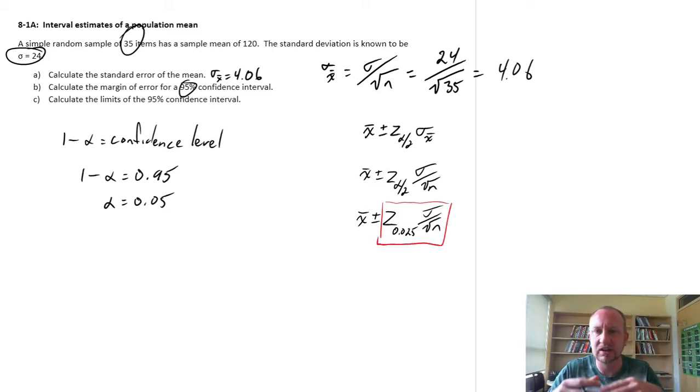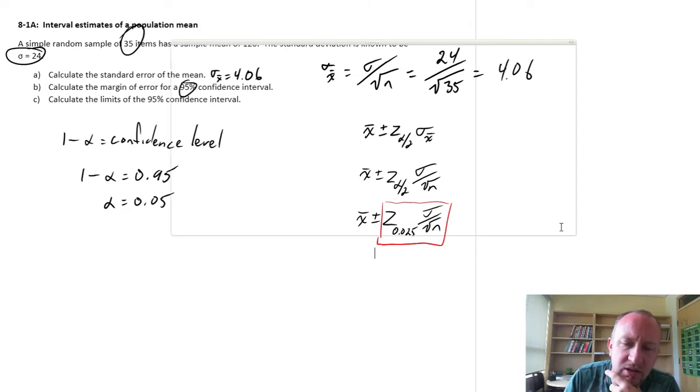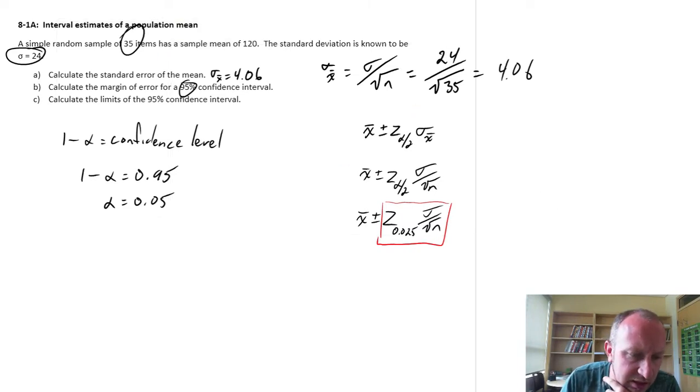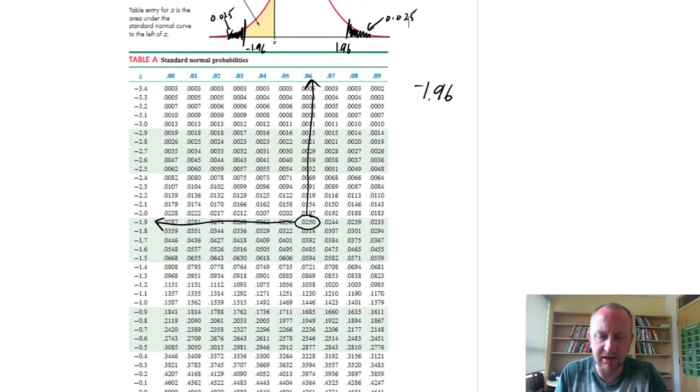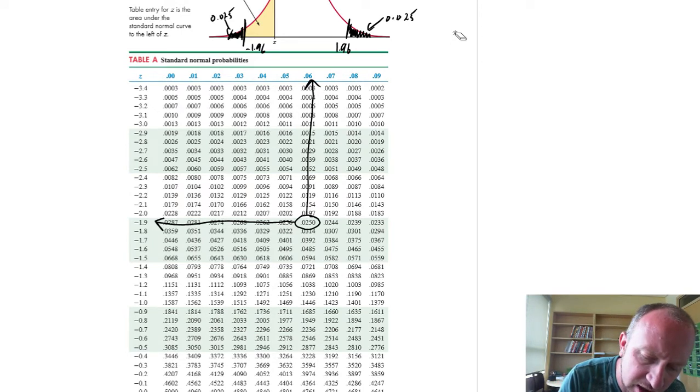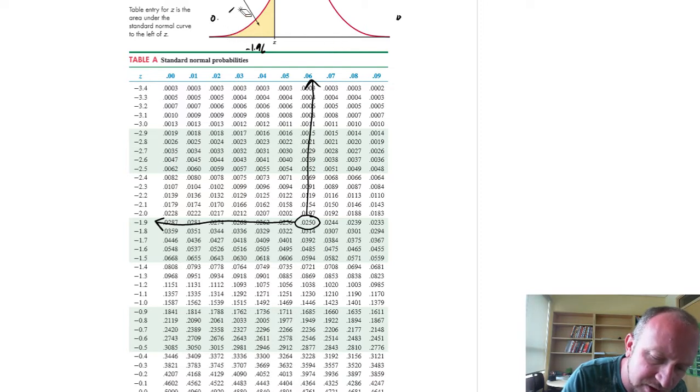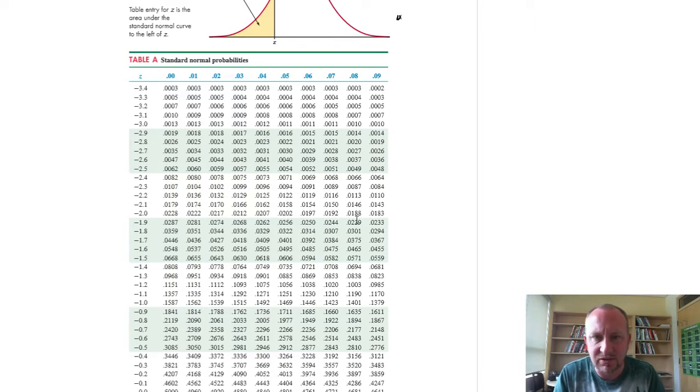So our margin of error for the confidence interval is this piece here. It's that critical value, that value that corresponds with our level of confidence times the standard error of the mean. So we then need to go to our z tables. So what we have to do, I'll erase it, and we'll just start over here.